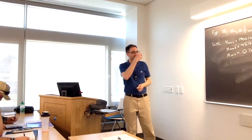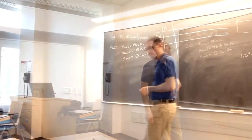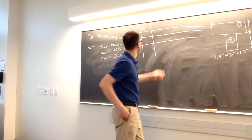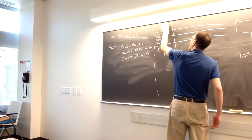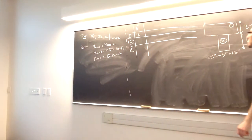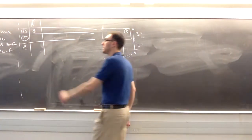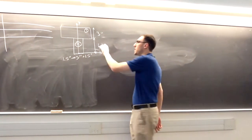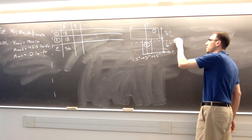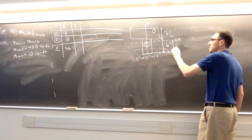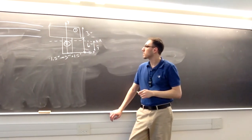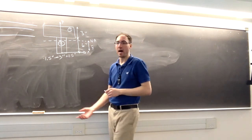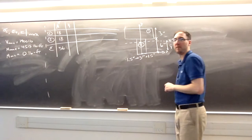This T-shaped beam can be split into two rectangles. Shape number one is going to be three inches by six inches, giving 18 square inches. Shape two is also three inches by six inches. Placing the coordinate system at the bottom of the beam, I'm first looking for where the neutral axis is located.